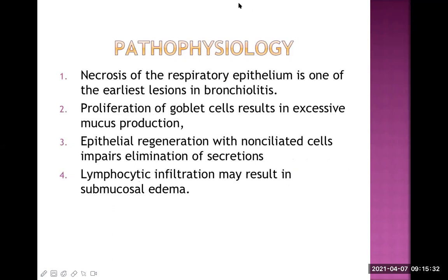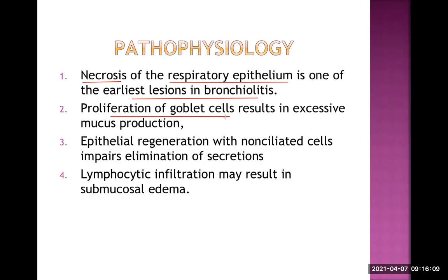What is the pathophysiology? How do these viruses or bacteria cause the problem? They lead to infection first in the respiratory epithelium and then lead to death of the cell — necrosis of the respiratory epithelium — which is one of the earliest lesions in bronchiolitis. At the same time, there is proliferation of the goblet cells. Goblet cells secrete mucus, so because of this proliferation there is excessive mucus production.